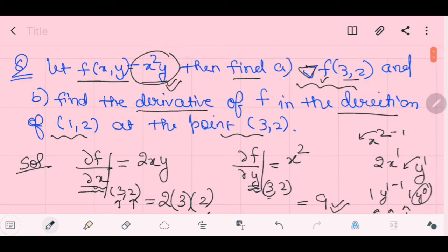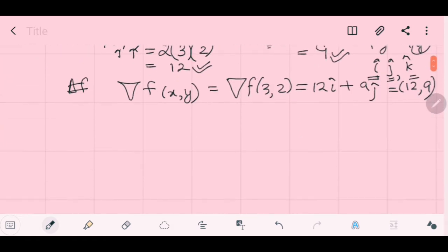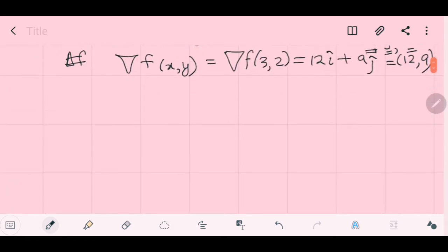So your first part is over. Now, you need to find out the directional derivative of this point at the point (3, 2). Direction, the direction is in (1, 2), but the point is (3, 2). So in that case, what you need to do, because it is directional derivative, you know when you have position vectors. For x axis, you have i, for y axis, you have j, and for z axis, you have k. So these are 3 vectors.